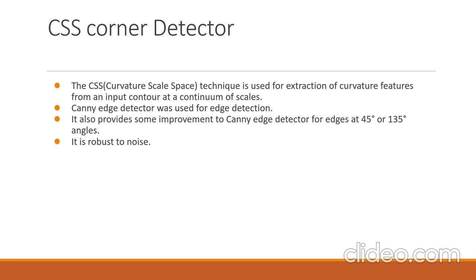Now let's talk about the CSS corner detector that the author presented in the paper. The CSS corner detector uses the curvature scale space technique for extraction of curvature features from an input contour at different scales. The author also used the Canny edge detector for detecting the edges in the given image. Canny edge detector gave better results, so the author went ahead with it. The author also proposed some improvements to the Canny edge detector for edges at 45 degrees and 135 degrees angles.